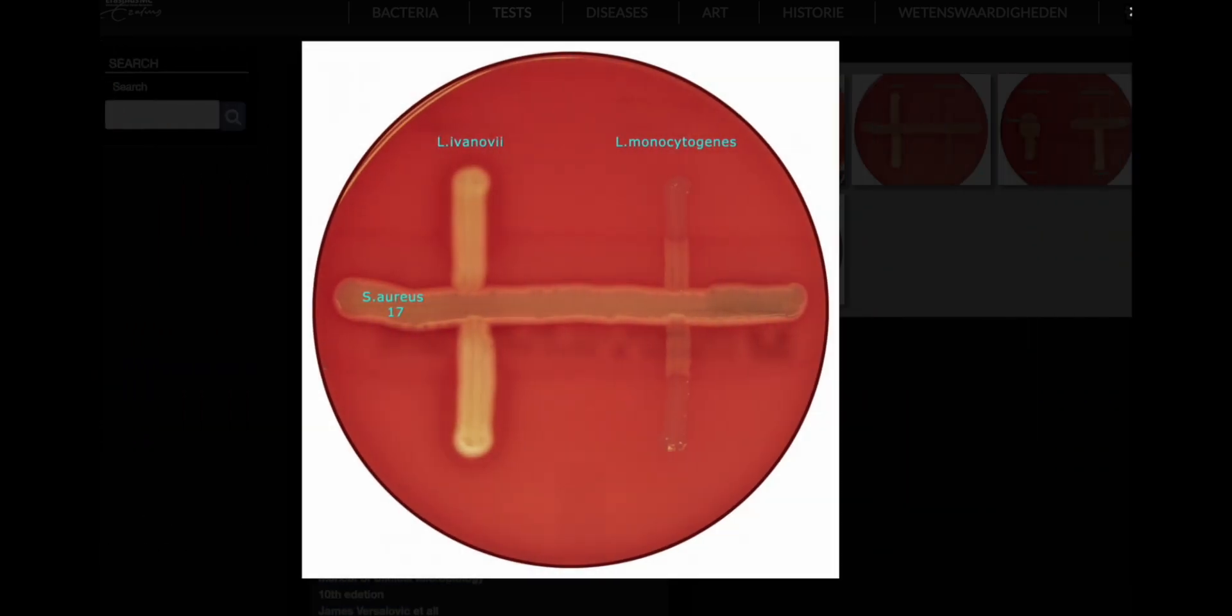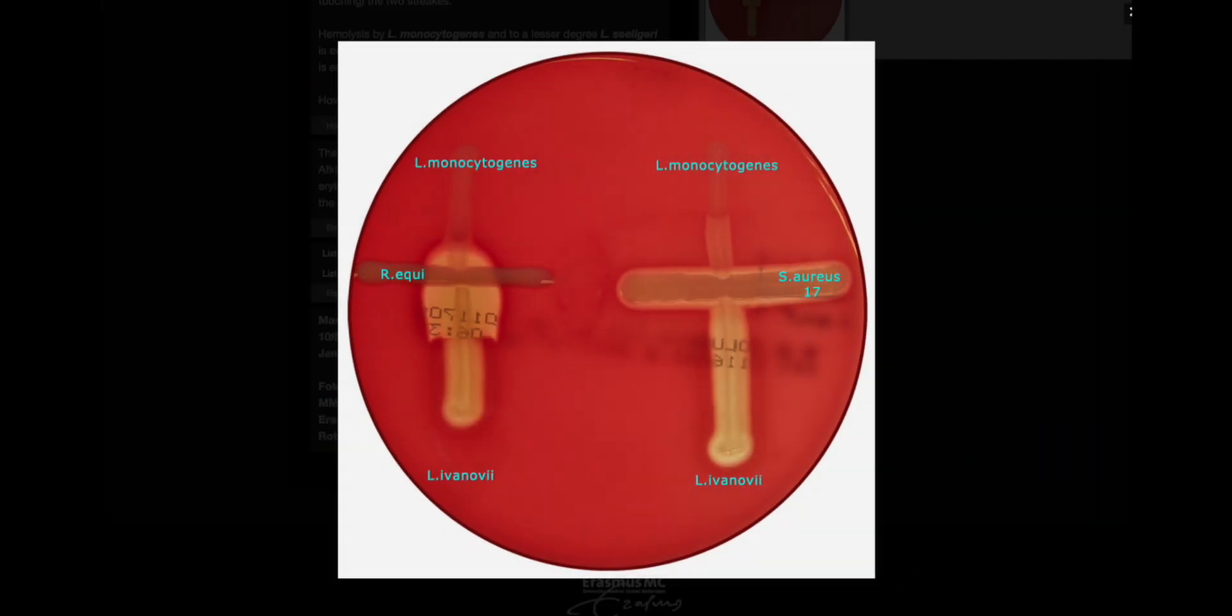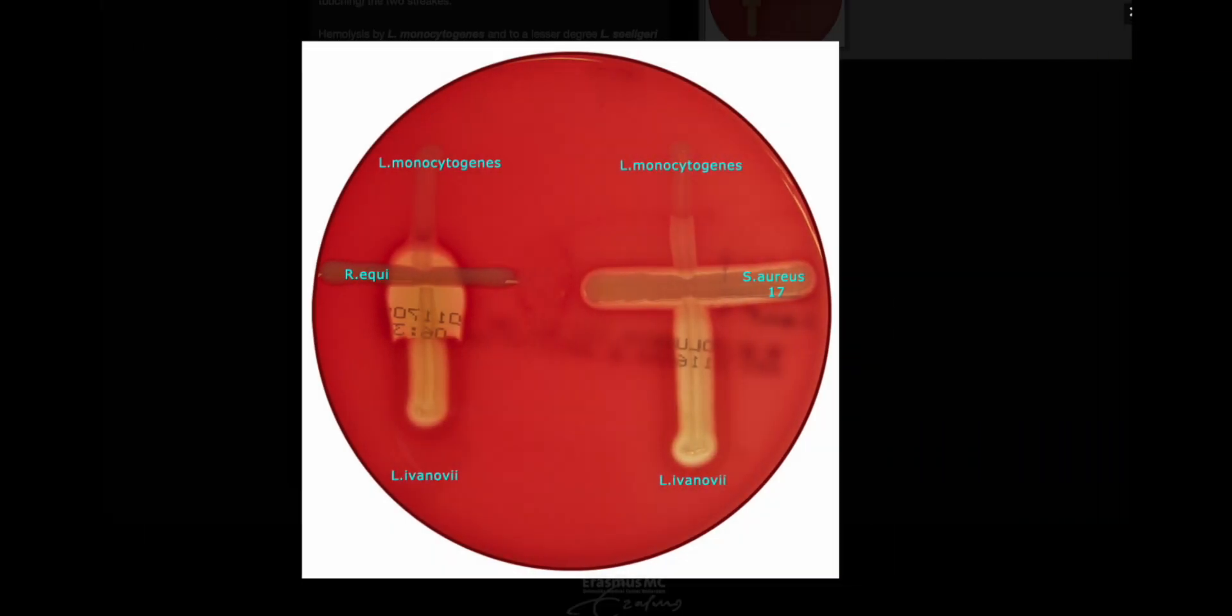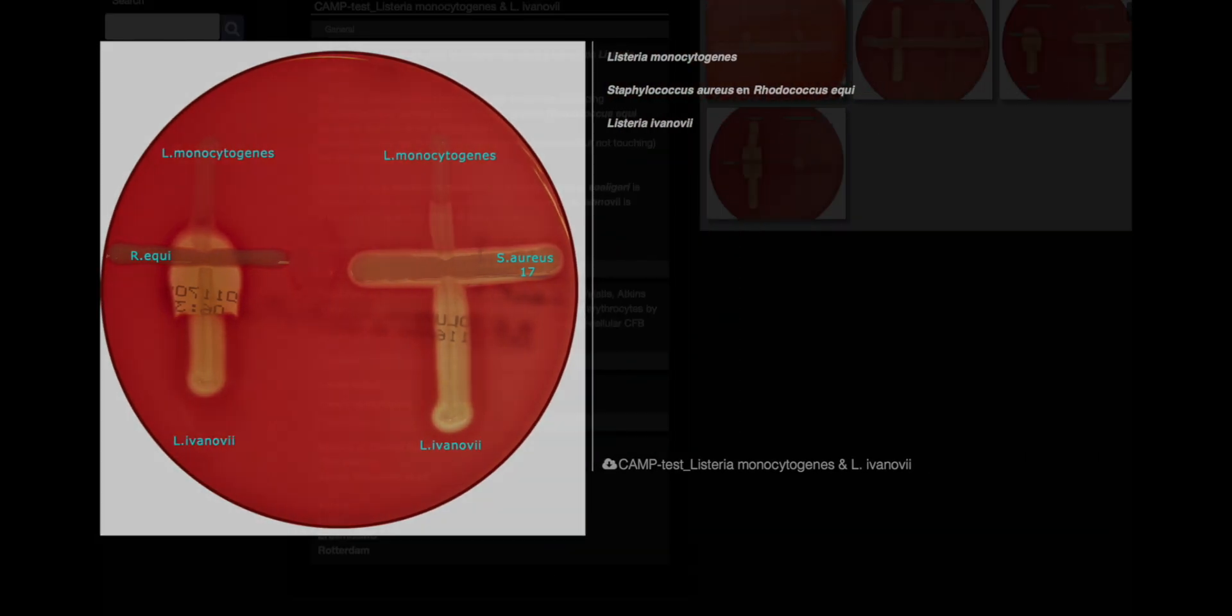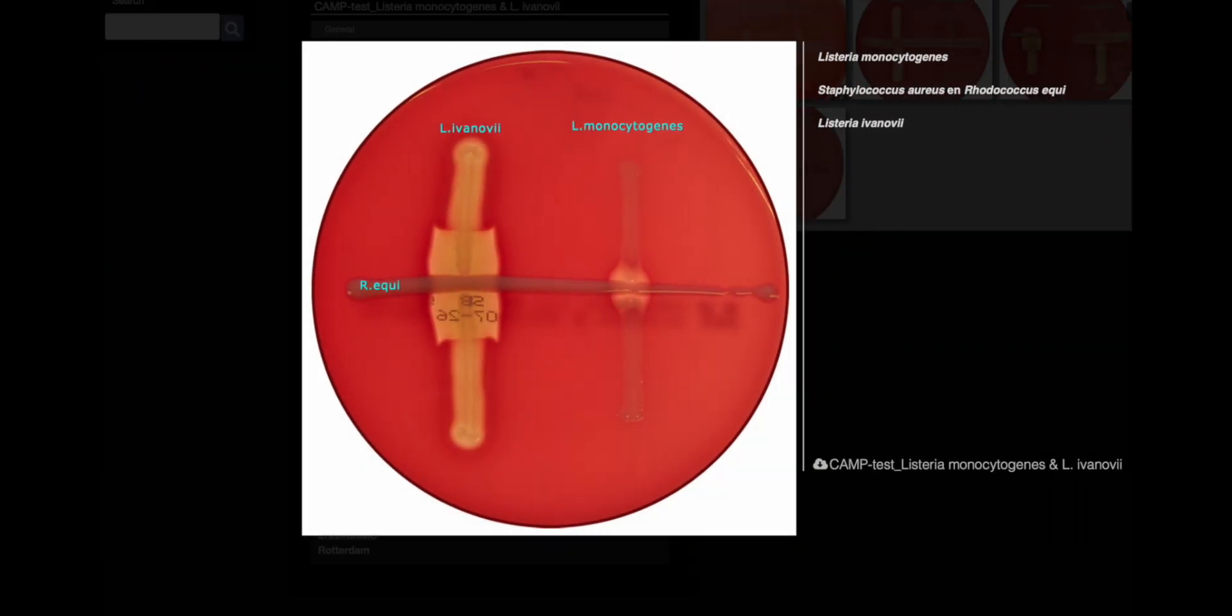To conduct this test, a beta-hemolysis producing Staphylococcus aureus ATCC 25923 strain and Rhodococcus equi are streaked parallel to one another on a blood agar plate. Suspected cultures are then streaked perpendicularly between, but without touching.